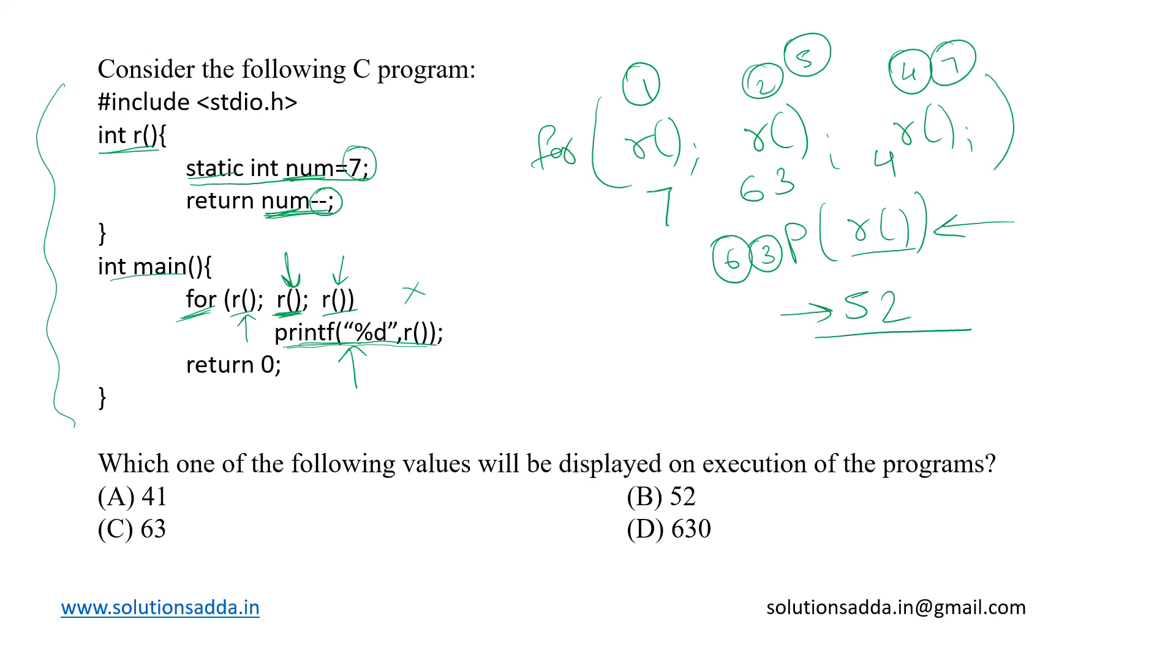Now the seventh call will be over here in the increment decrement that will return the value 1. Then the eighth call will be over here for checking the condition and this time the value returned will be 0.